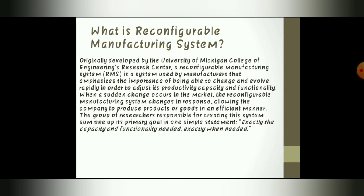Friends, instead of wasting time completely reading the paragraph, I will tell you what is RMS in simple words. RMS was originally developed at the University of Michigan College of Engineering Research Center. RMS is a system that manufacturers use, and it focuses on changing and evolving any manufacturing industry with a certain change in market. Whenever changes come in the market — such as a sudden increase or decrease in product demand — this reconfigurable manufacturing system plays a role according to those changes, allowing the manufacturing industry to produce only as many products as needed in an efficient manner.